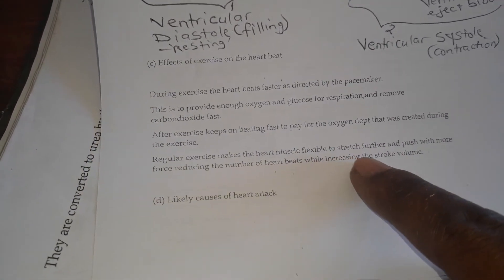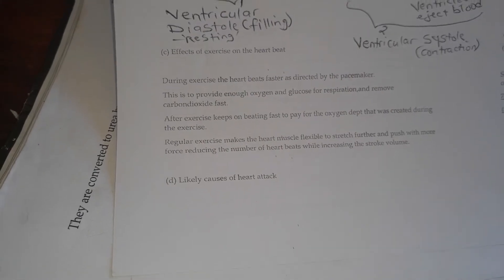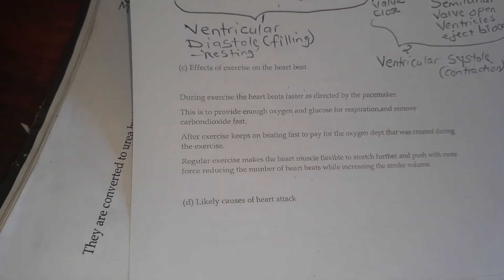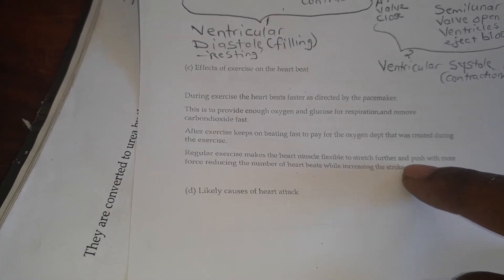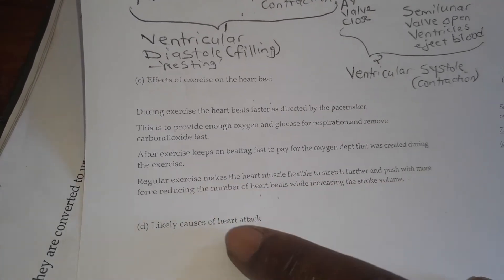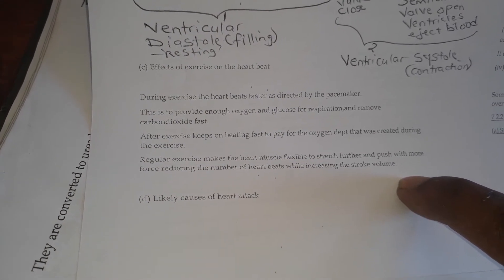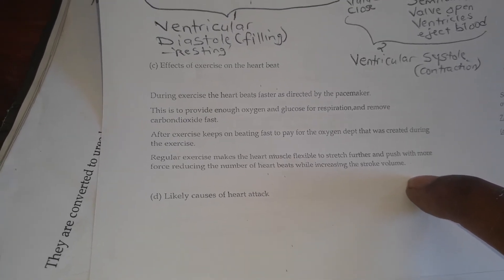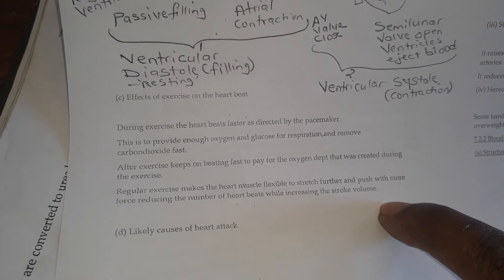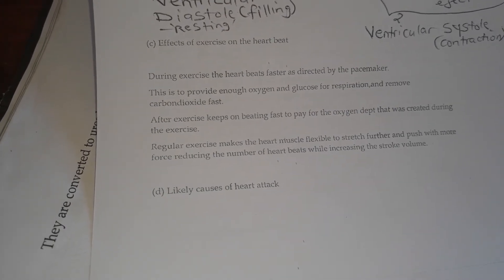Regular exercise makes the heart muscle more flexible so that it can stretch further. It's like when you have the heart of a Corolla, and then when you exercise, the heart becomes like that of a Hilux. Because the heart becomes bigger, every stroke pumps more blood. When you're fit, your heart beats slower; when you're unfit, it beats faster. Reducing the number of heartbeats while increasing stroke volume — that's why a truck engine goes boom, boom, boom and pulls a very heavy load, while small cars rev much faster.